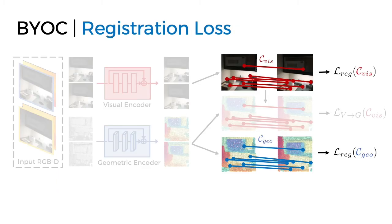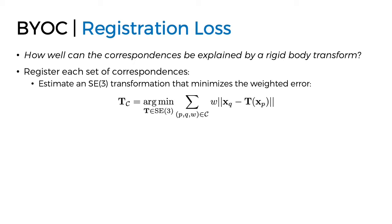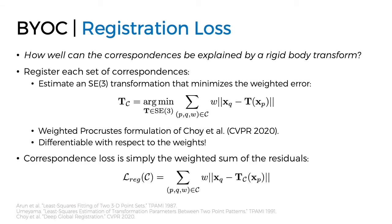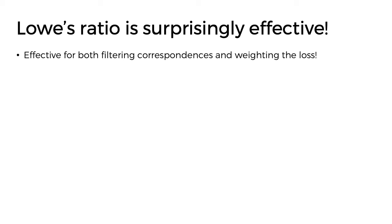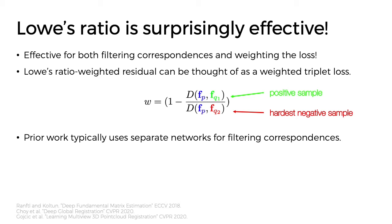We then apply a registration loss to each set of correspondences. Intuitively, our learning signal comes from the question: how well can the correspondences be explained by a rigid body transform? We do this by first finding the SE3 transformation that minimizes the weighted residual error between the correspondences. We use the weighted Procrustes formulation to register the correspondences, which allows us to maintain differentiability with respect to the weights. Once we register the correspondences, we use the sum of weighted residuals as our loss. We note that Lowe's ratio weights are surprisingly effective for both filtering correspondences and weighting the losses. This loss can be thought of as a weighted triplet loss, where the first nearest neighbor is the positive sample and the second nearest neighbor is the hardest negative sample — and importantly, this is done with estimated correspondences, not ground truth.